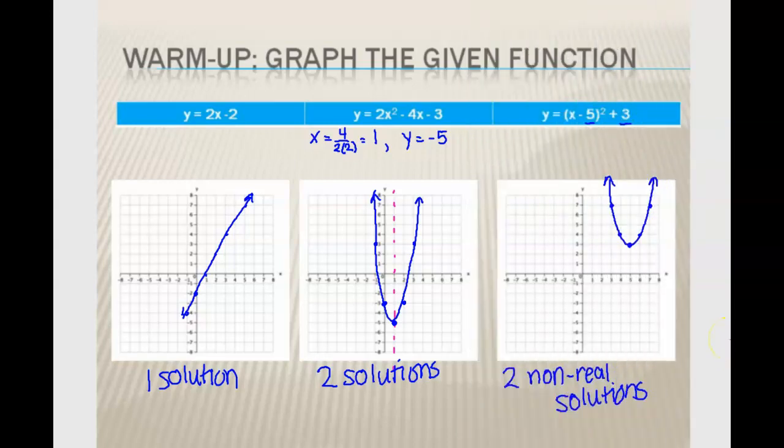And then in example number 3, we have no real solutions because the graph's vertex is shifted up and to the right. Therefore, it never crosses the x-axis. Therefore, I have no x-intercepts and no real solutions. If I were to solve that using quadratic formula or completing the square, my answers would have i's. So again, if you can do that warm-up, if you can graph these quadratics and you can find your vertexes, plot those points, then what we're going to do today is relatively easy.